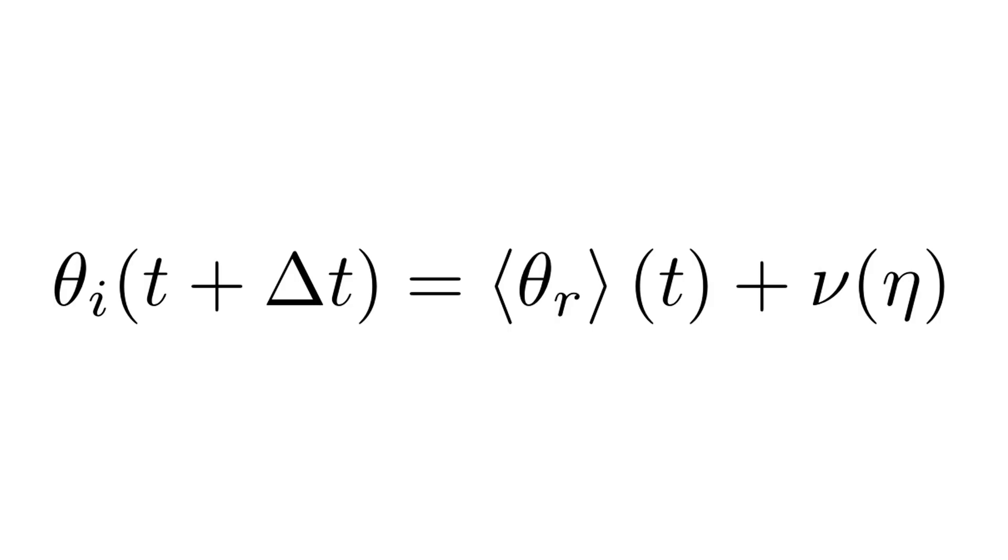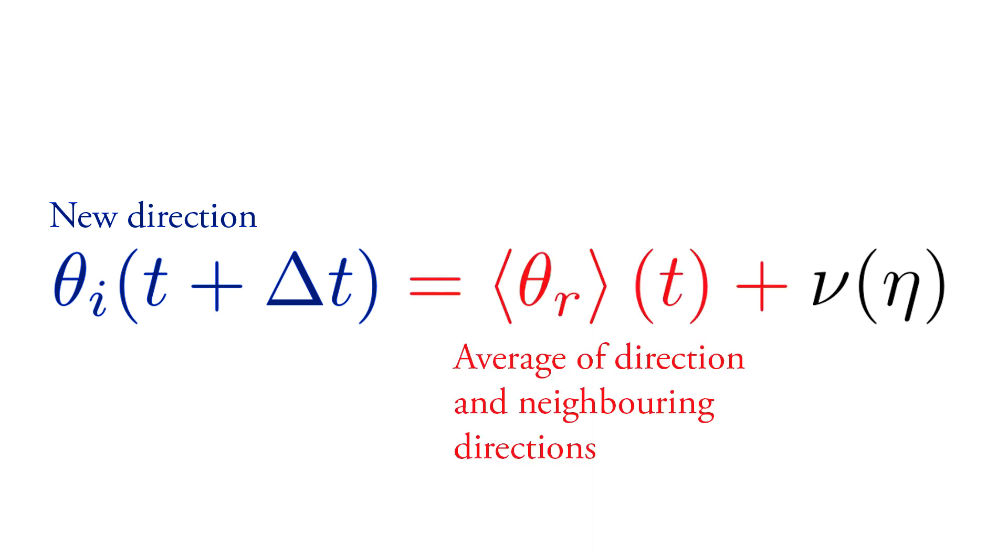This can be described with this equation which gives us the expression for the new direction of each bird after a time step delta t. This new direction theta i is the average of the directions of itself and the neighboring bird, which we call theta r. We also add a noise term nu.